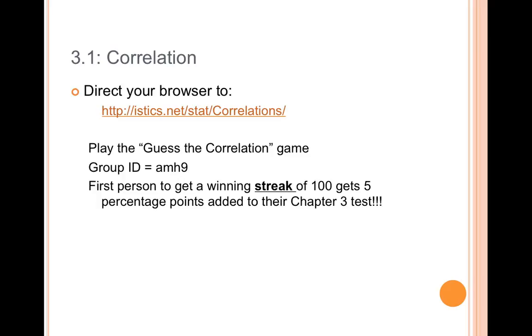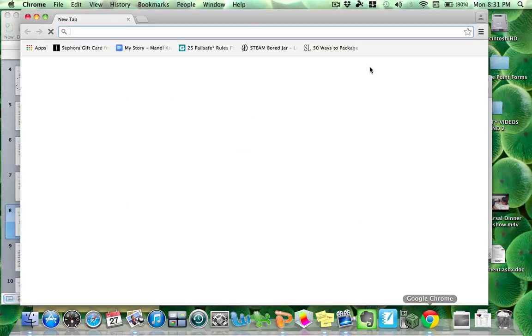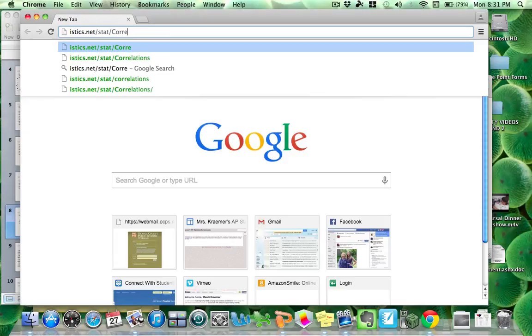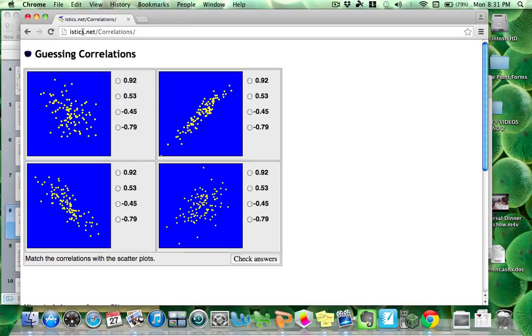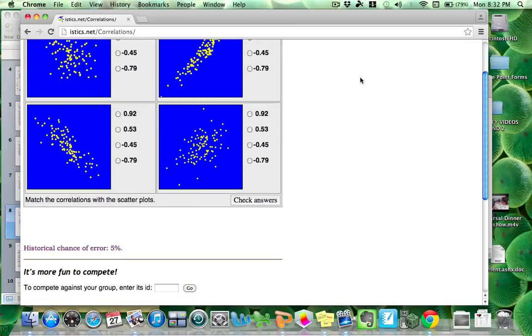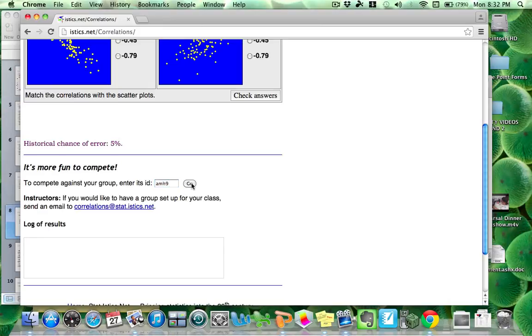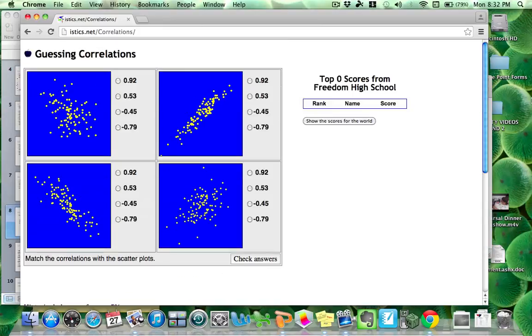Hopefully we all at least have that address written down. If not, then maybe pause the video so that everybody can get that. I'm going to go ahead and open an internet browser. So I'm going to istics.net/stat/correlations. And it takes me to a page like this. Now this does run on Java, I believe, so we may have some issues here. Just do your best to figure this out. Before we start, down here at the bottom, it says it's more fun to compete against your group, enter its ID. Our ID is A-M-H-9. So hit go. And yours may have some scores over here now because students have been playing this today.